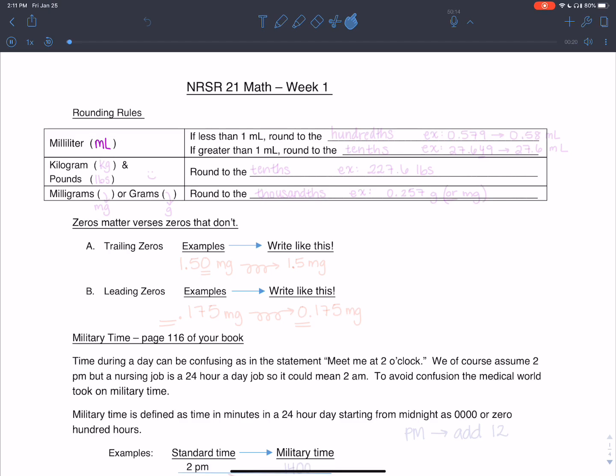So milliliters, abbreviated ML, capital L, lowercase m. And if it's less than one milliliter we're talking about, small dose, small little amount of milliliters, then we round to the hundredths place. So an example of this would be something like 0.579. This is not in the hundredths place, but the nine is in the thousandths place. So if we want to round that appropriately, since nine is more than five, we round to 0.58, round the seven up.